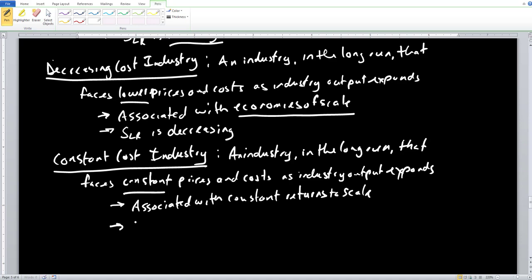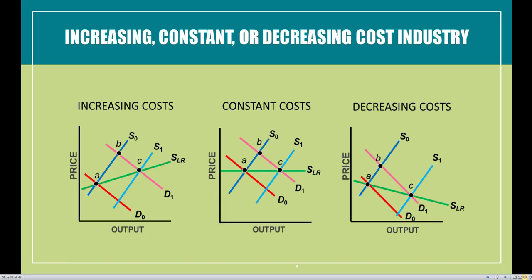With the constant cost industry, we notice that the long-run supply curve is going to be horizontal, meaning prices are going to remain exactly the same. Using the same analysis — shifting from point A to B to C — we compare point A to C, and as output expands, prices are the same as before. Franchises and pharmacies tend to be constant cost industries or firms that operate under constant cost industries.